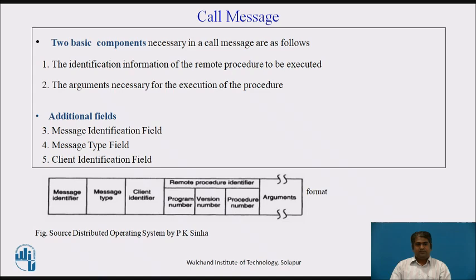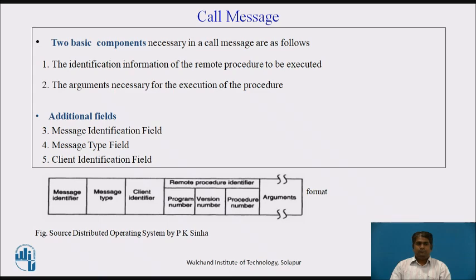The fourth field is a message type field used to distinguish call messages from reply messages. For example, in an RPC system, this field may be set to 0 for all call messages and set to 1 for all reply messages. A client identification field may be used for two purposes: to allow the server to identify the client to whom the reply message has to be sent, and to allow the server to check the authentication of the client process for executing the concerned procedure.